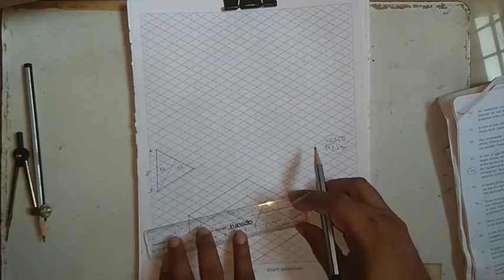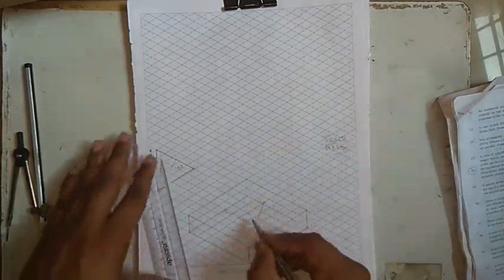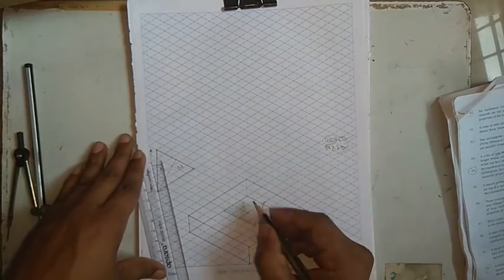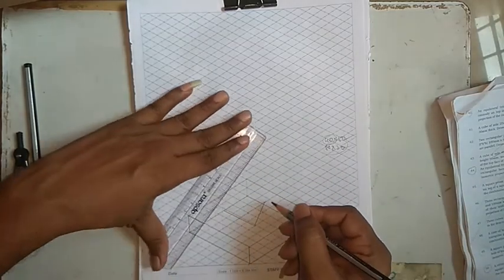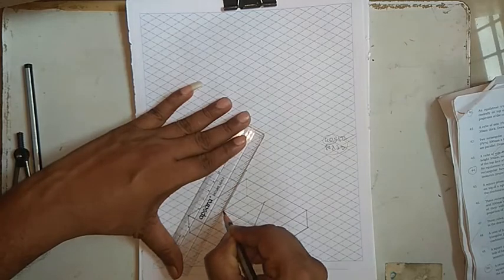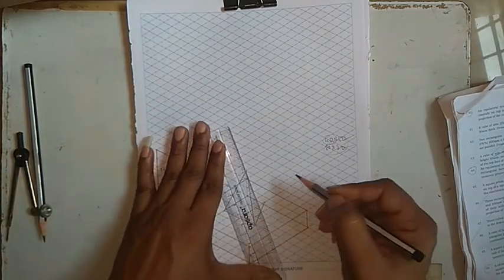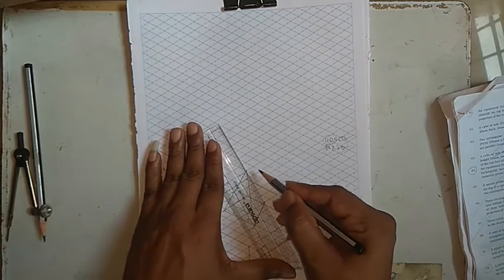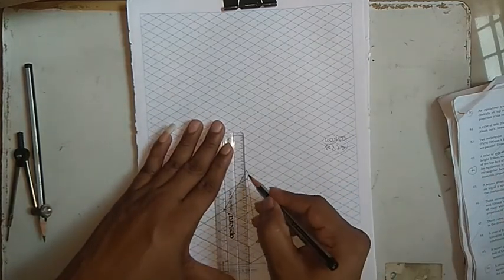This side will not be visible, so have a thin line. From the center, they have given 50, so move 50: 1, 2, 3, 4, and 5. Now just connect to the corners: 1, 2, 3. From here to here just have an axis line.